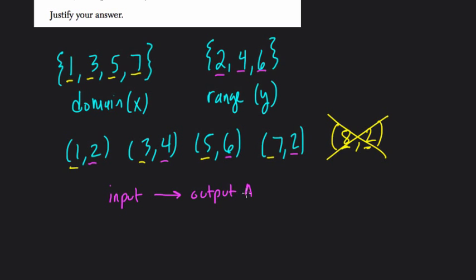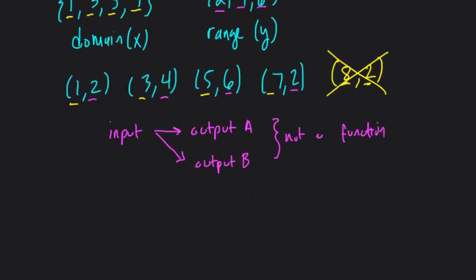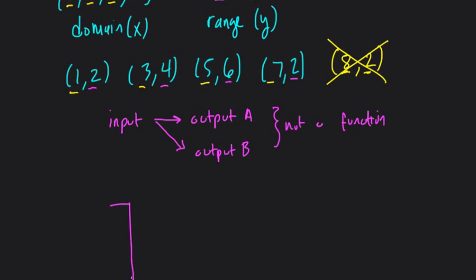Right? Let's call it output A. If there's another output, B also associated with the input, then this is not a function. That can't happen. So one way we can justify this quickly is to use map diagrams. You can draw two little regions. We have D for domain: 1, 3, 5, and 7.